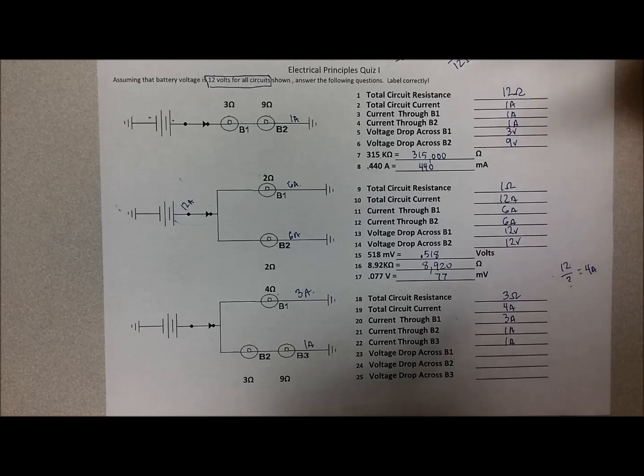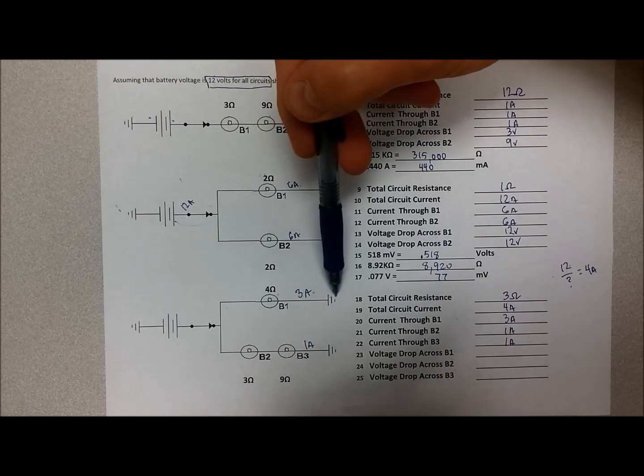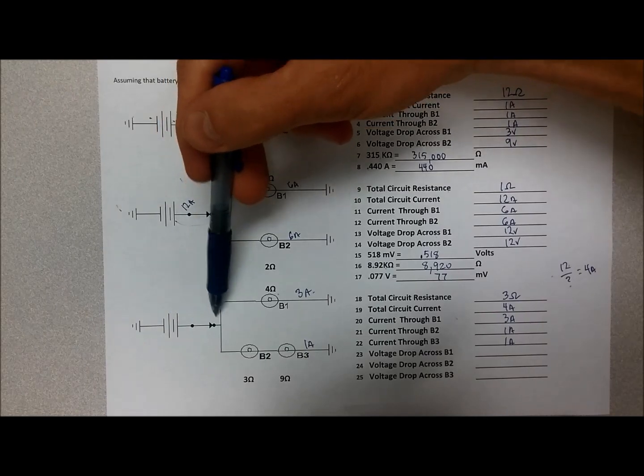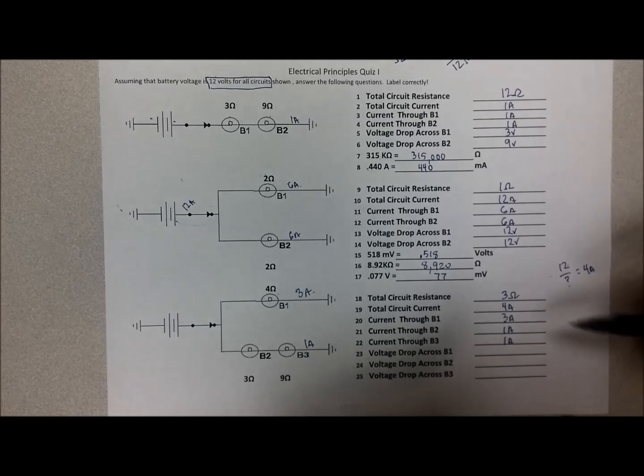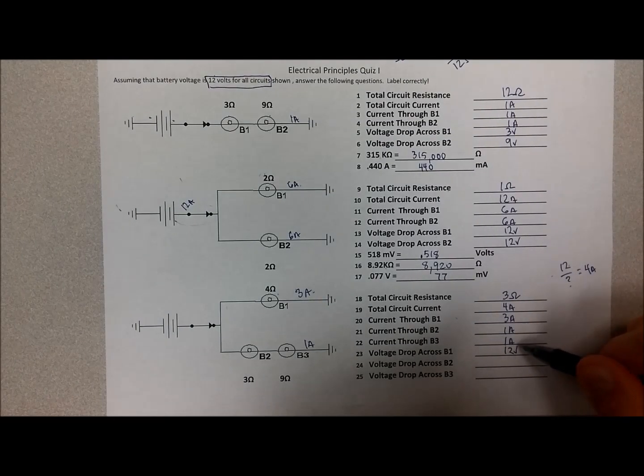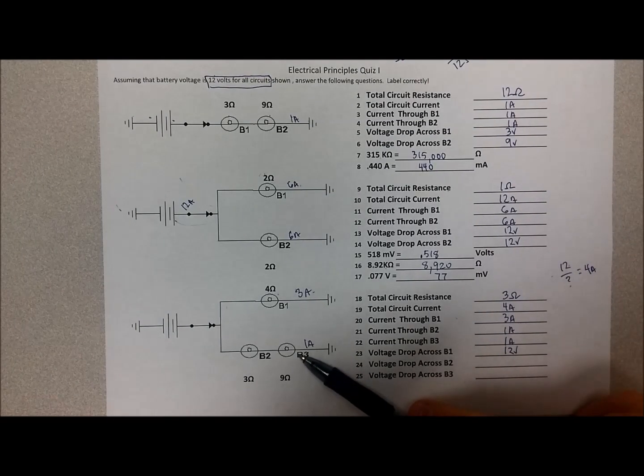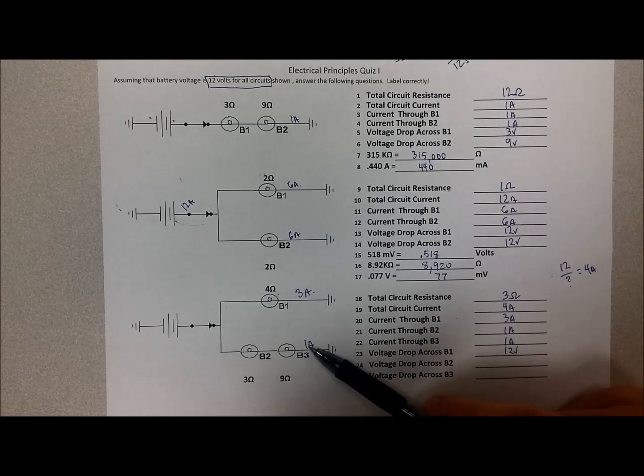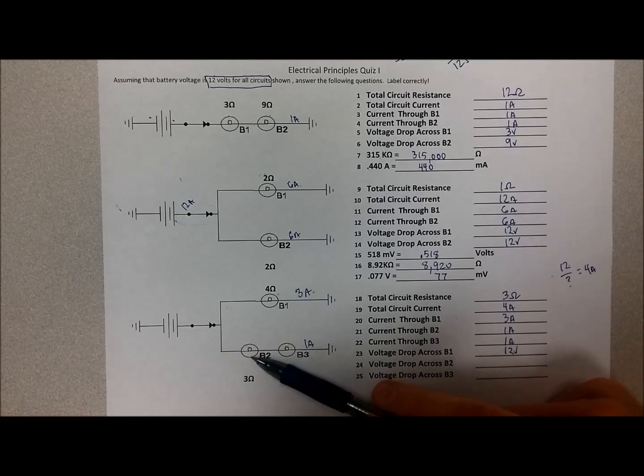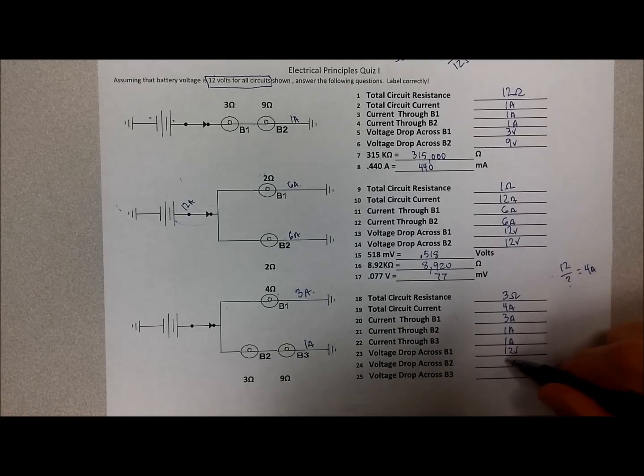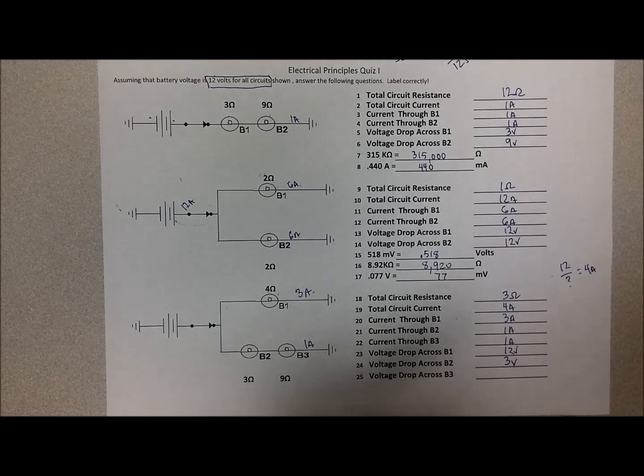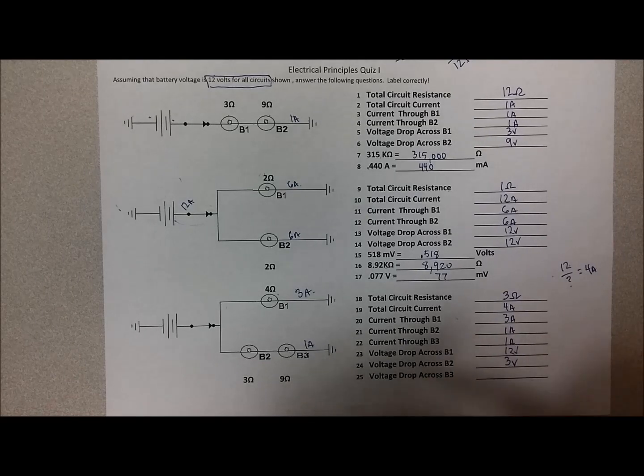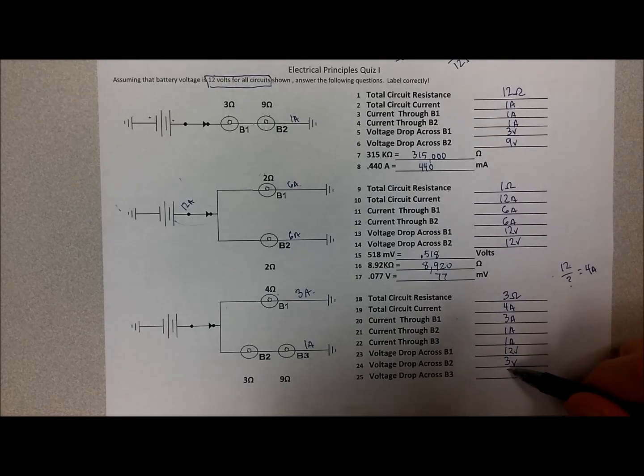Voltage drop across bulb 1. Well bulb 1 is the only bulb in this circuit. The only bulb that stands in the way of those electrons from getting from one side of the battery to the other. So it should drop all 12 volts or we can say 3 times 4, 3 amps times 4 ohms, 12 volts drop there. Now down here there are two bulbs that it has to go through. So we can calculate it if we have 1 amp flowing through them. 1 amp going through a 3 ohm bulb would result in a 1 times 3, 3 volt drop. Leaving 9 volts or 1 times 9 for a 9 volt drop in bulb 3 right there.